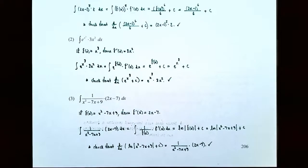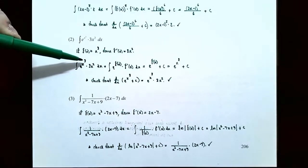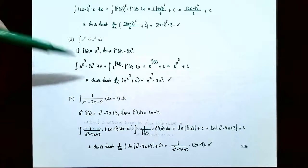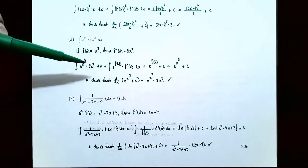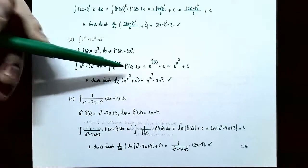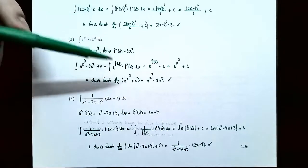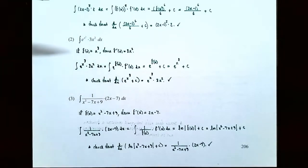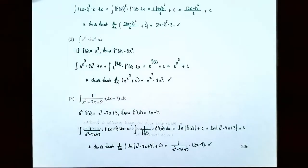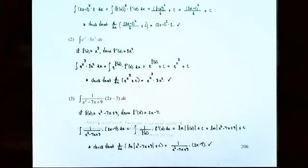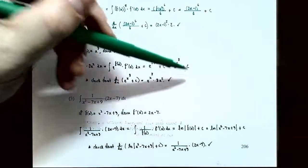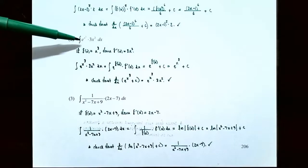Now replace x cubed with f of x. The integral of e to the x cubed power times 3x squared dx becomes the integral of e to the f of x, and we know 3x squared is the derivative of f of x, so replace that with f prime of x. Now use the second integration formula, because it's e to a function f of x and f prime of x appears in the integrand. The family of antiderivatives is e to the f of x plus c. Replace f of x with what we said it was — x cubed — so this is e to the x cubed plus c. This is the family of antiderivatives for e to the x cubed times 3x squared.